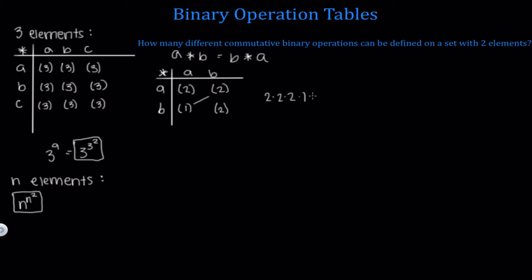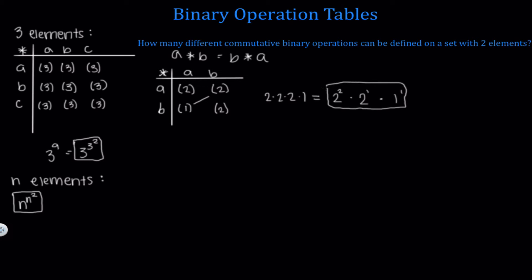Let me rewrite this more efficiently using the diagonal. The diagonal will always have as many spots as there are elements — so two spots here. The spots on the diagonal correspond to A star A and B star B, and since these don't rely on any other ordering, there are always two choices per diagonal spot. So we write 2 squared for the diagonal, then multiply by 2 to the first for the spots above the diagonal, and 1 to the first for spots below. This gives the number of commutative binary operations on a set with 2 elements.